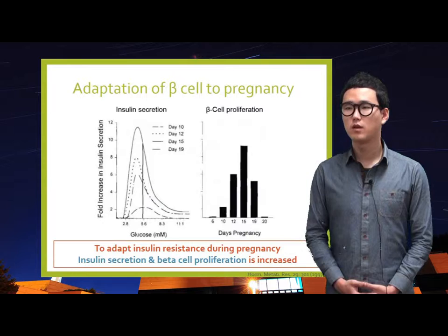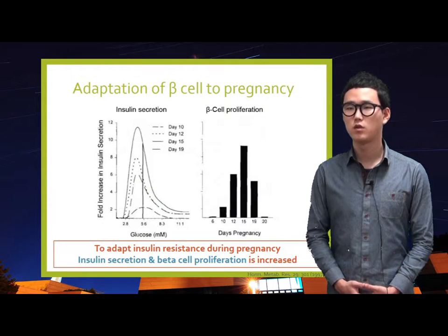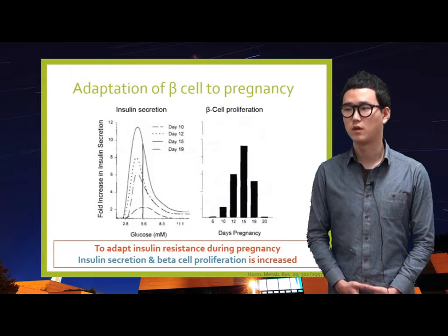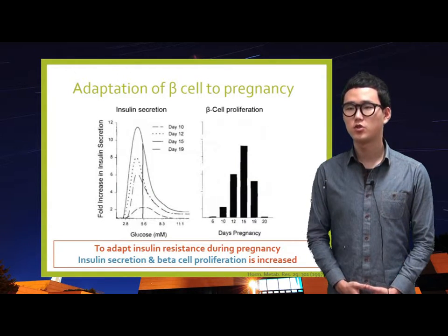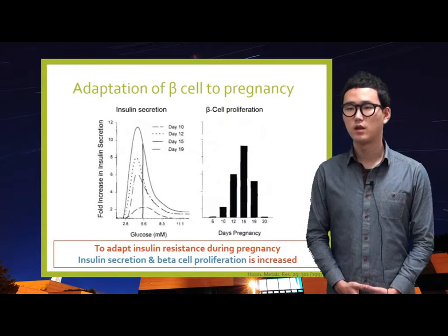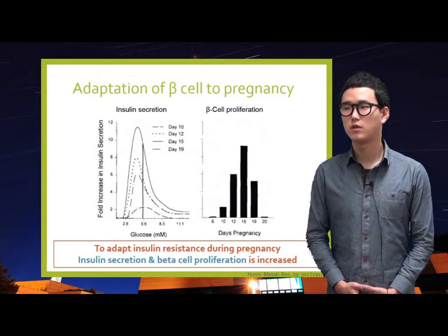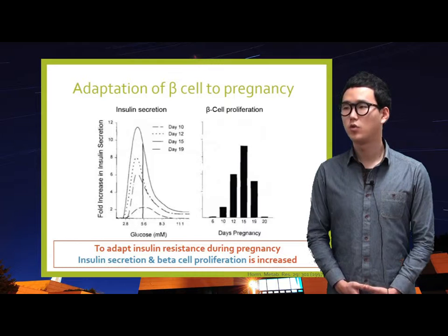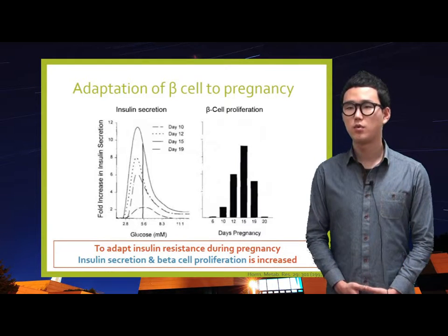During pregnancy, insulin resistance develops in the mother to supply enough nutrition to the fetus. To compensate, several changes occur in mother's beta cells. As time goes by during pregnancy, glucose-stimulated insulin secretion increases up to a maximum of 12-fold, and beta cell proliferation also increases.